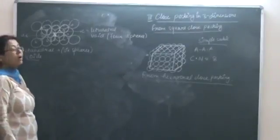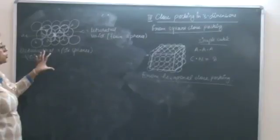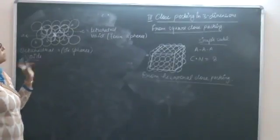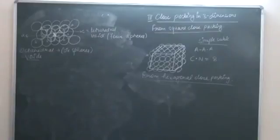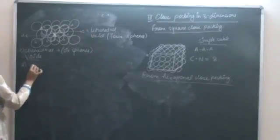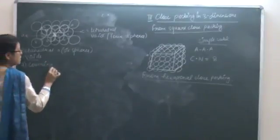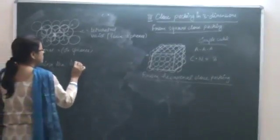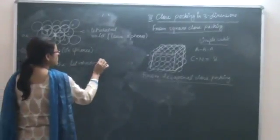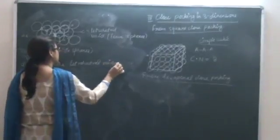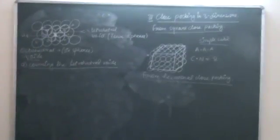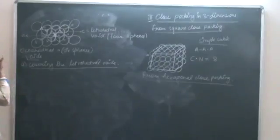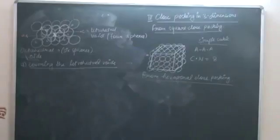So let's first cover the tetrahedral voids. When we cover the tetrahedral voids, the arrangement is going to be ABAB type, in which the first layer is different from the second layer, but the third layer is similar to the first.